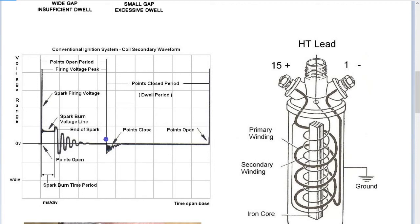If you increase the RPM — going faster and faster — the amount of time the points are closed will determine how much time the coil has to charge up. You can see there is a slope before it charges up; you need to look at the primary for this. You'll see a period of time where it has to overcome the inductance, then the voltage begins to rise as the primary winding charges up. As RPM climbs, we can reach only a couple of thousand RPM before the dwell time becomes insufficient for the coil to fully charge.